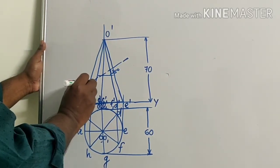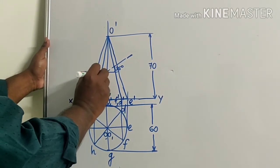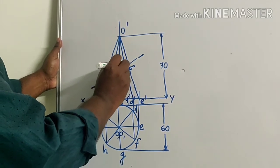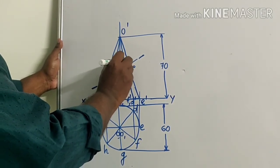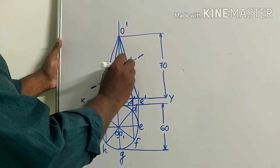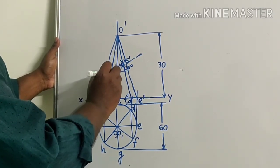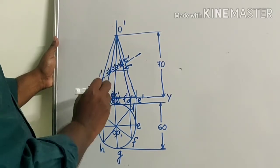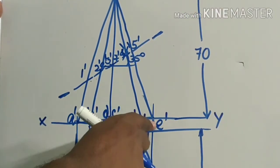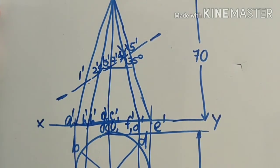Along O' A' you are having point 1'. Along O' B' you are having 2'. Similarly, you will have 3', 4', 5', 6', 7', and 8' along O' C', O' D', O' E', and so on up to O' H'. You know how to draw the section also.